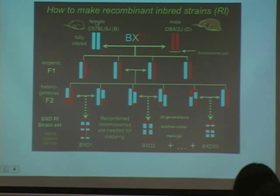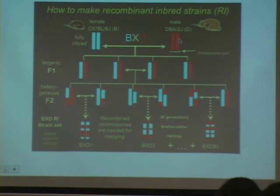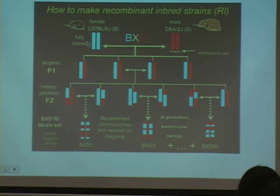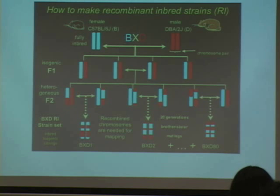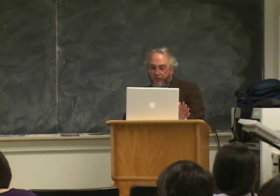That makes them good candidates for this kind of analysis. We crossed these two F0 strains — what we're representing here with blue or red bars is a single chromosome pair, though this would be true for all chromosome pairs. In the F1 generation, these mice are isogenic — they all have the same genes — but with regard to where their genes came from, they're completely heterozygous. So they have one chromosome from their mom and one from their dad: one from the B strain, one from the D strain.